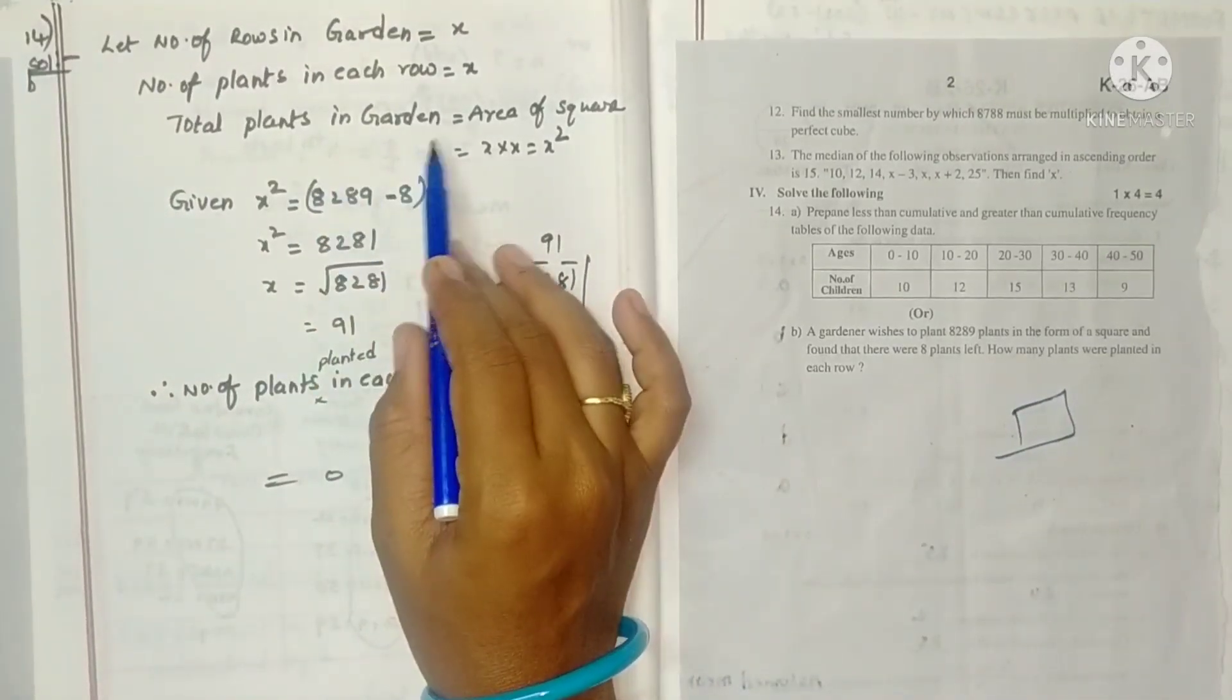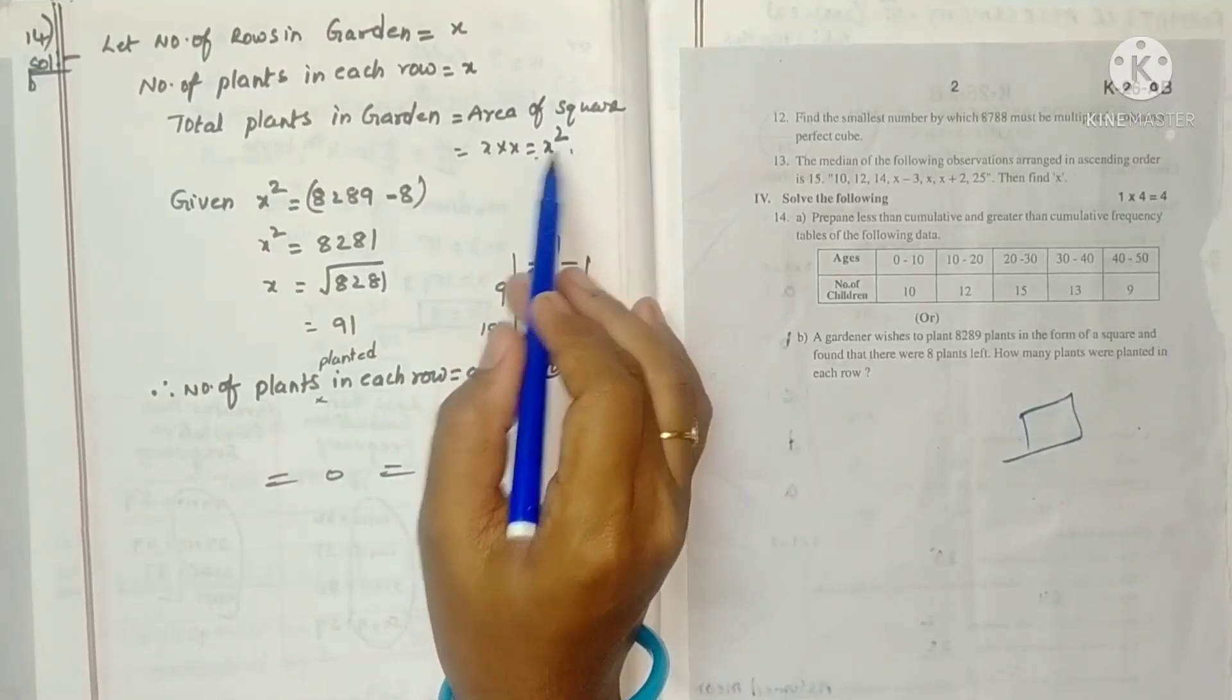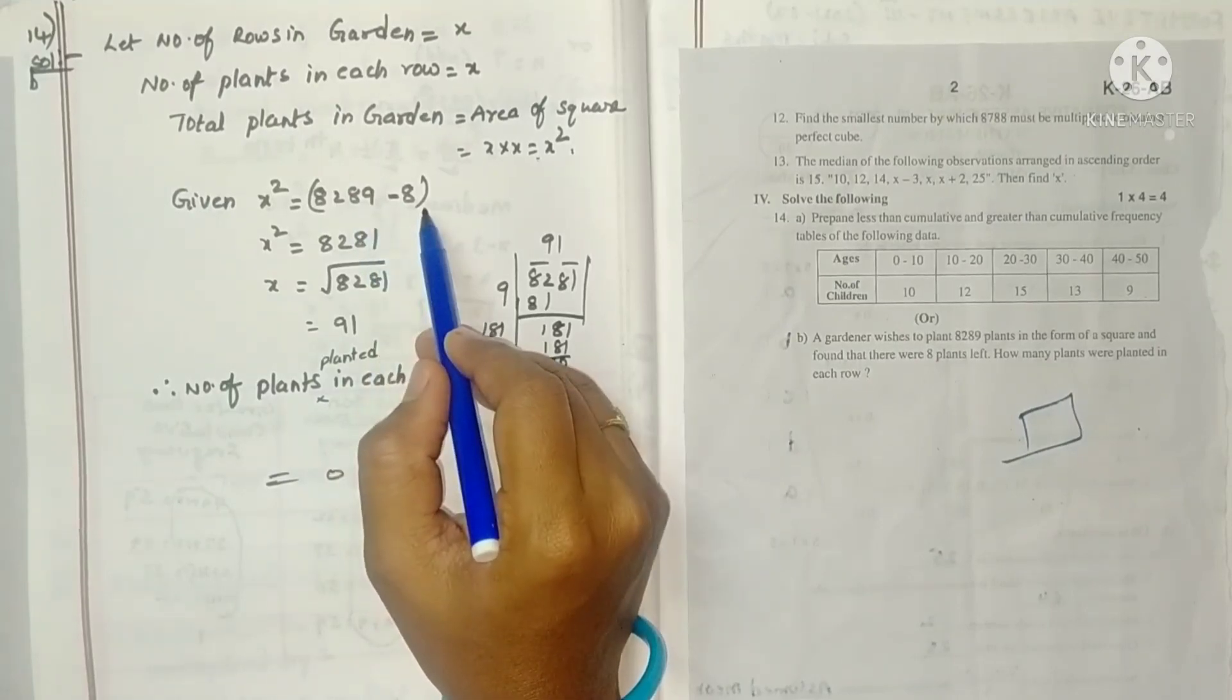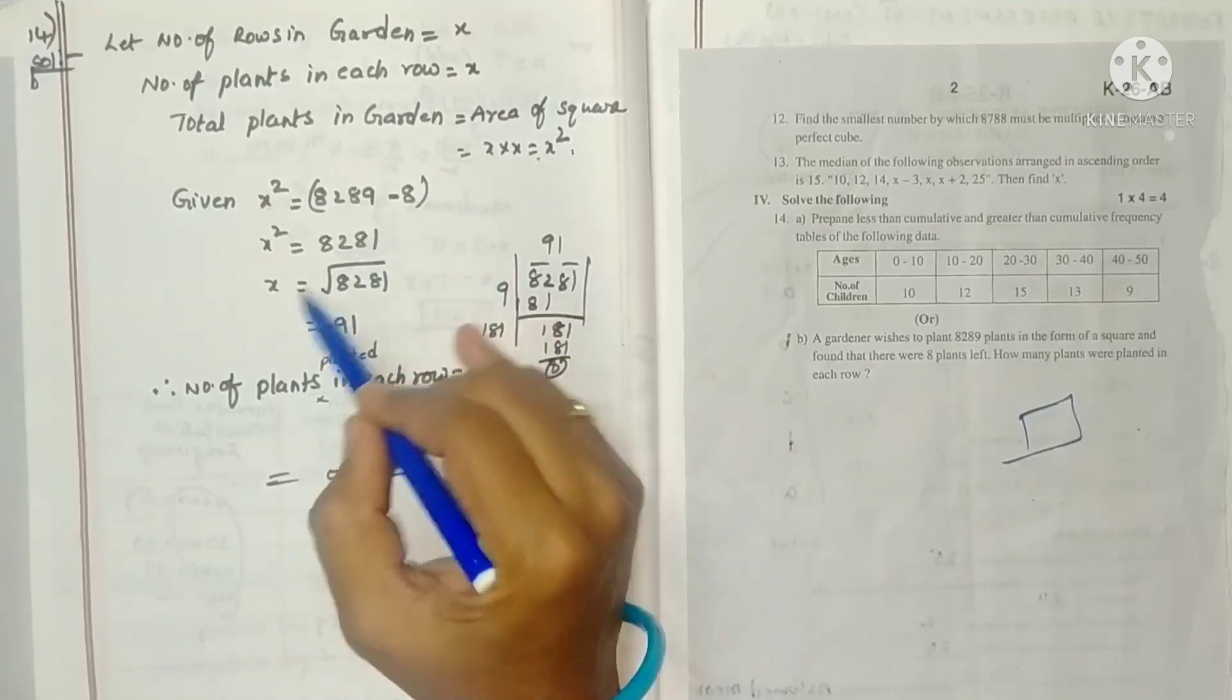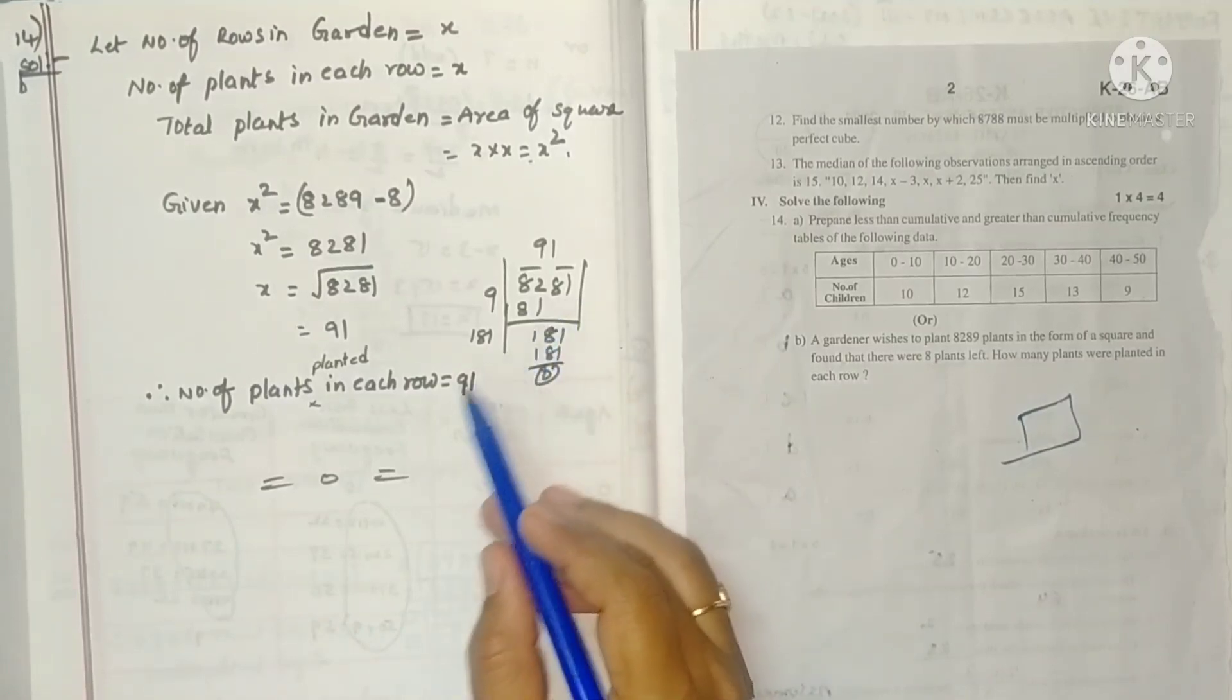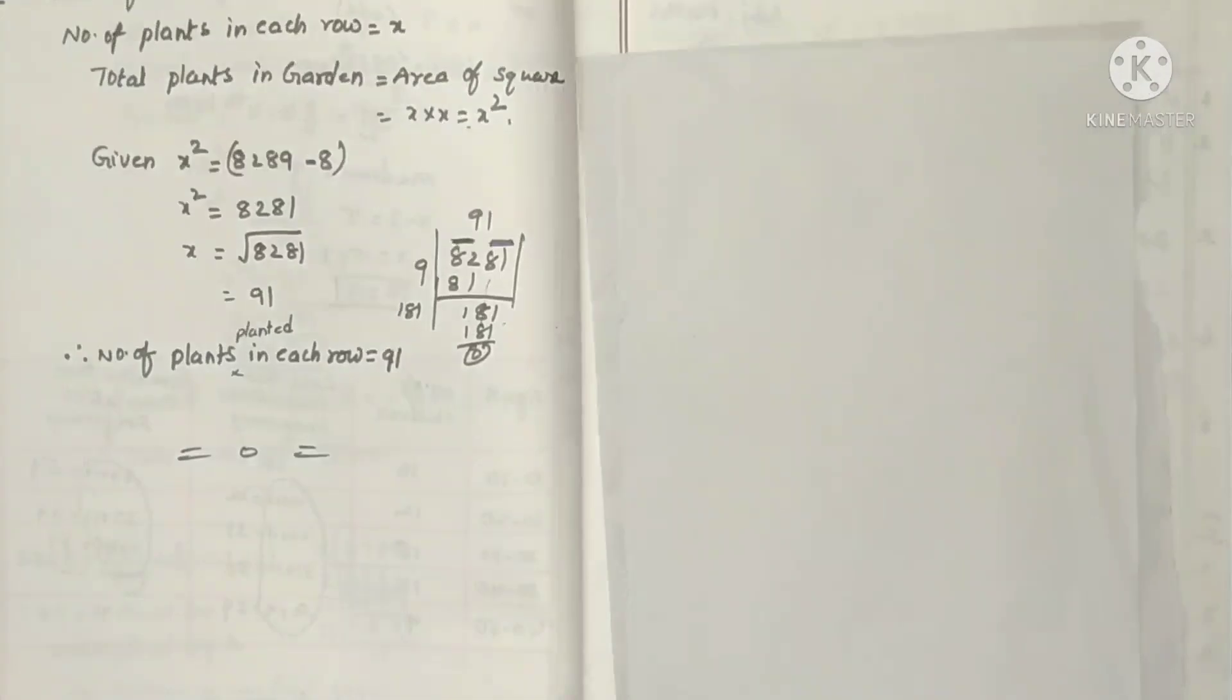Total plants in the garden means area of the square, X into X equals X square. But they are telling 8289 plants, 8 plants are remaining, so total plants. X square equals this. X equals square root of this. You can calculate like this. Number of plants planted in each row is 91.